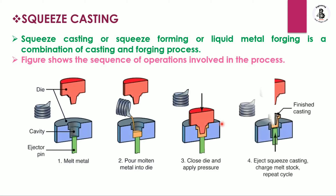The last step: after the solidification process, eject the squeeze casting, charge metal stocks, and repeat the cycle. After removing the pressure, with the help of the ejector pin you will get a finished casting. This squeeze casting process — also called squeeze forming or liquid metal forging — is known as a combination of all these processes.